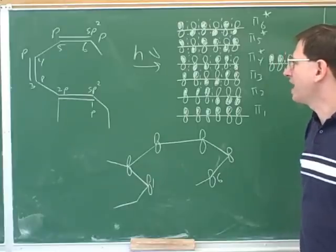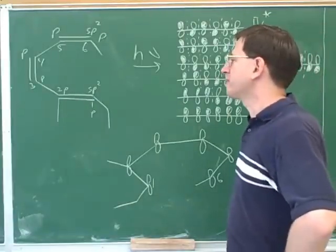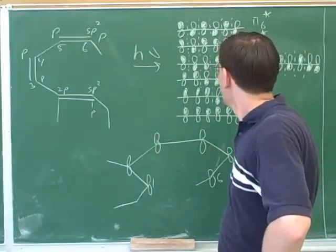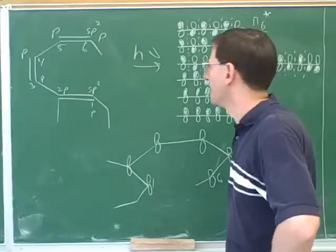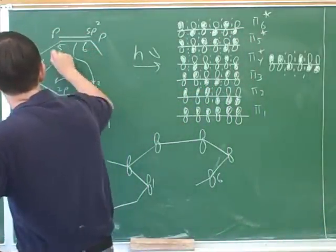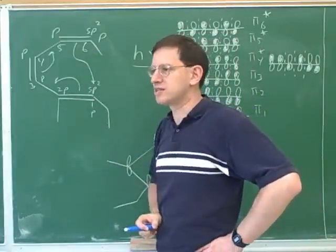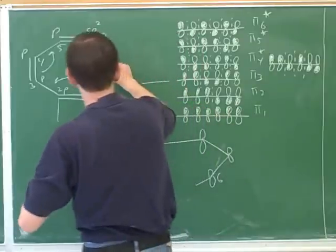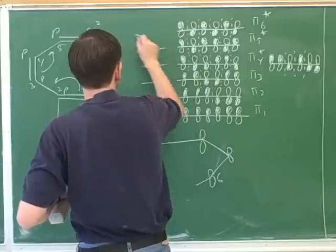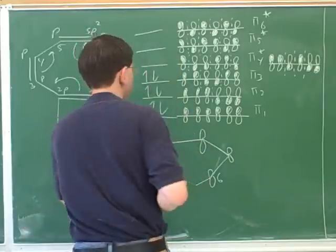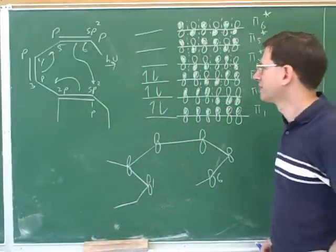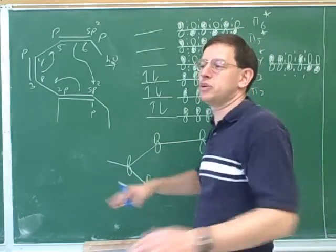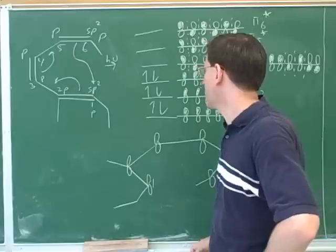Now we have to draw our pi electron diagram. One thing to remember is we're only drawing the pi molecular orbitals — we're purposely leaving out all the sigma molecular orbitals. How many pi electrons are in this reaction? Six — there are three arrows which means six electrons participating. This would be our normal electron diagram for a thermal reaction. When we add heat, it just helps get over the activation energy; we assume the electrons are in their ground state.